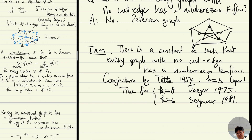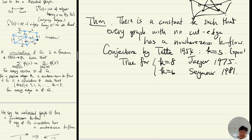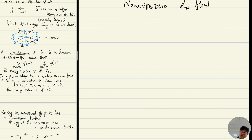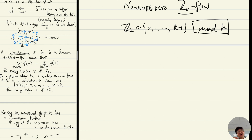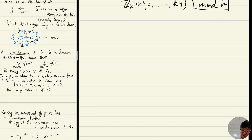In order to understand these proofs, we need a different generalization of nowhere-zero k-flow. We'll talk about nowhere-zero Z_k flow. What is Z_k? Z_k is integers modulo k — when you add two numbers it becomes again a number between 0 and k-1.